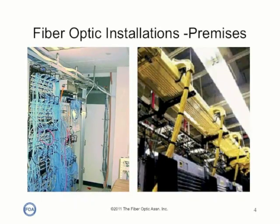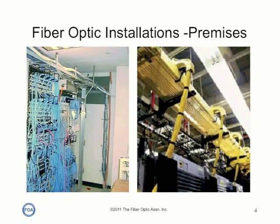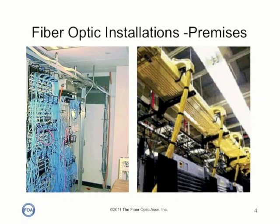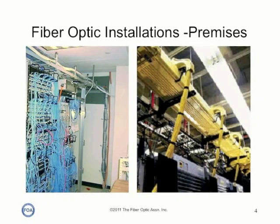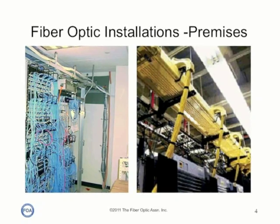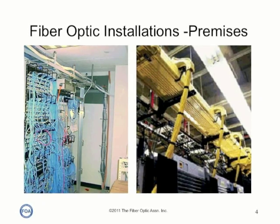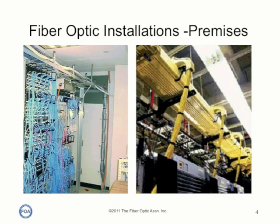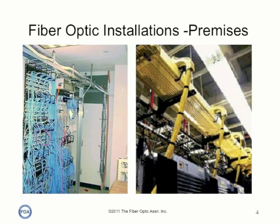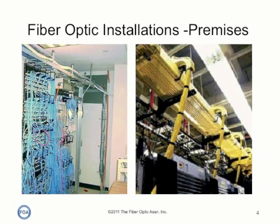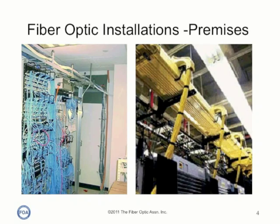Premises installations are easier on the cables. They don't have to withstand the weather outdoors, but there are often large numbers of cables going to various locations. They're placed in cable trays or pulled in conduit or placed in J-hooks up on walls, and they eventually connect into patch panels and to equipment.